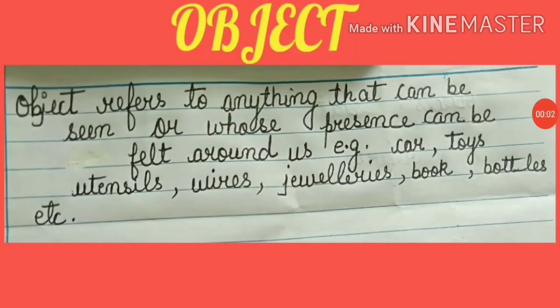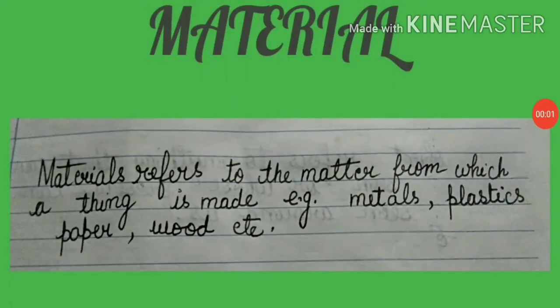Let's define these two key terms. An object refers to anything that can be seen or whose presence can be felt around us — for example, a car, toys, utensils. Material refers to matter — anything which occupies space and has mass — from which a thing is made; for example, metals, plastics, paper, wood, etc. Basically, objects are made up of material, and one material can be used to make many objects.